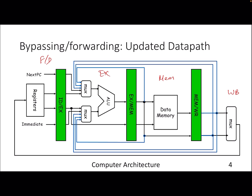In the previous lecture, dependent instructions encountering a read-after-write hazard were waiting for a write to happen in the write-back stage. But looking at the data path, the content for some register R2 is actually already available — either from the execute stage for an ALU operation, or from the memory stage for a load. So the output is available either after execute or after memory, but in the vanilla five-stage pipeline we wait for write-back.